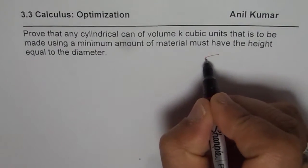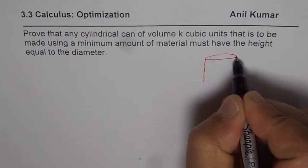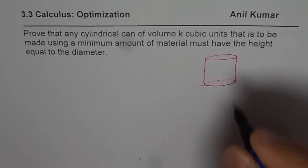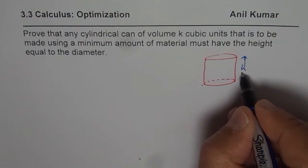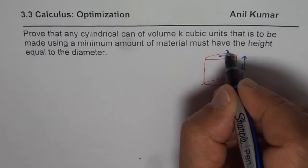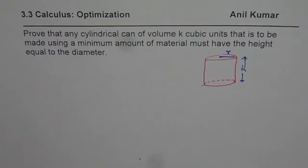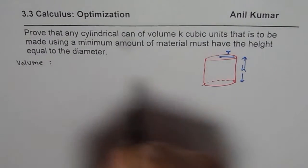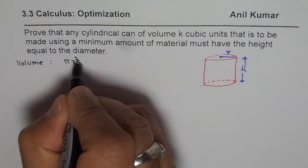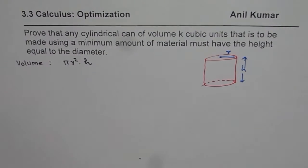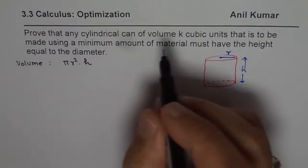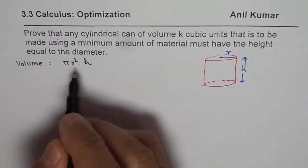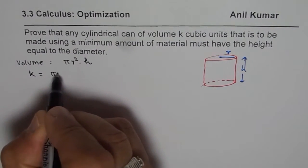Let us sketch one can which is cylindrical in nature. We will assume that the height is h and the radius is r for this particular can. Now let us see what the volume is. The volume of a cylinder is the area of the base, which is πr², times height. We are given that the volume is k, so k equals πr²h.